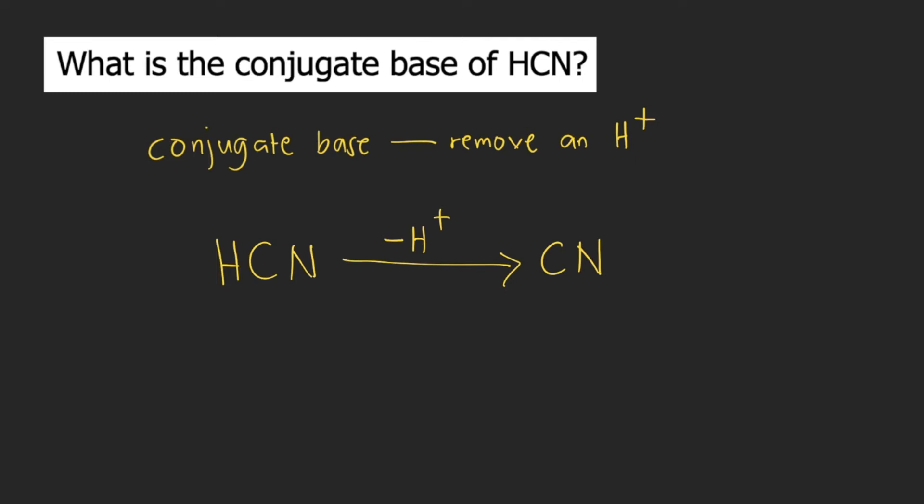But we're not yet done. We need to figure out the charge of the conjugate base. So how do we do that? Remember that HCN is neutral, so it has a charge of zero. So zero minus the charge of H plus is positive one. So zero minus positive one, that is equal to negative one.